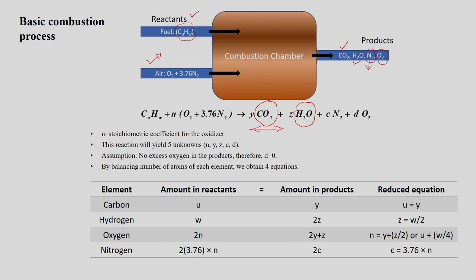In actual conditions, when the reaction is not following the stoichiometric path, a certain excess amount of oxygen is required to completely burn the fuel. Once excess oxygen or oxidizer is supplied for the reaction, it will lead to additional products along with CO2 and H2O.